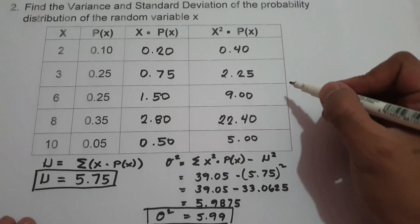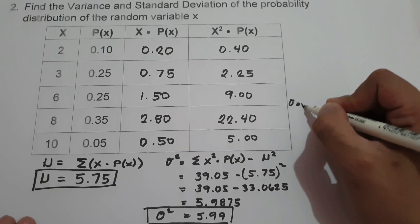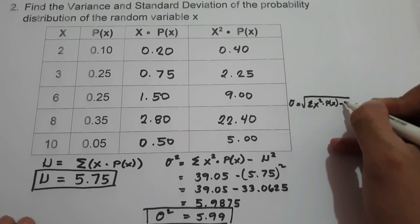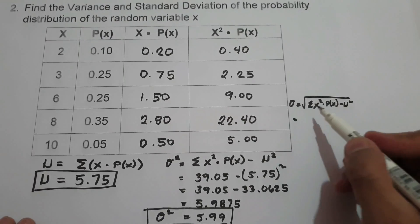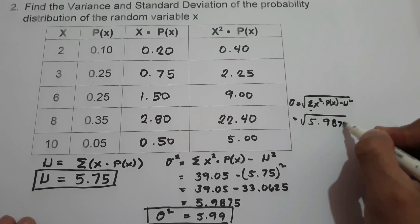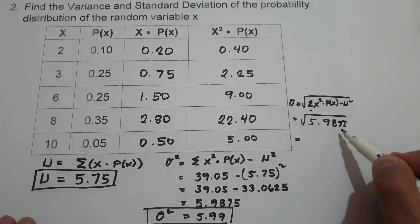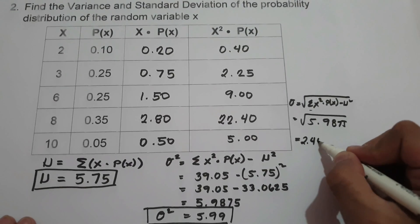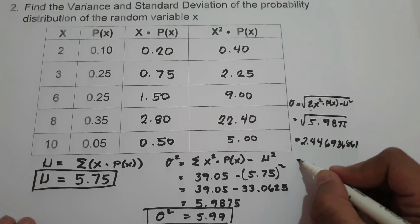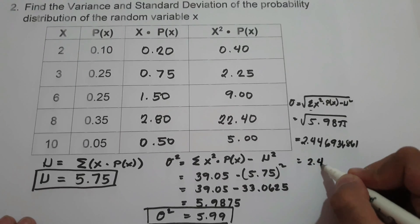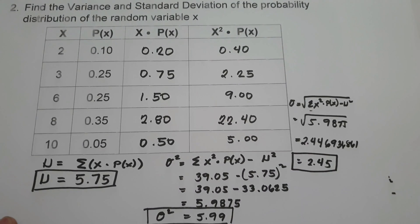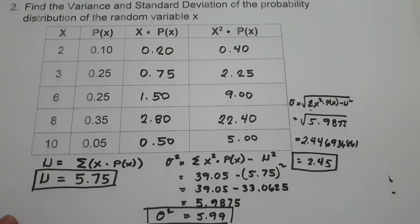To find the standard deviation, we use the formula: square root of the summation of x squared times p(x) minus mean squared. The value of that expression is 5.9875, and the square root of 5.9875 is approximately 2.446936861, or we can write our answer as 2.45. This is our standard deviation. I hope you learned from this lesson. Thank you so much for watching, and God bless us all.